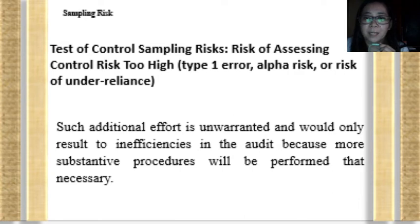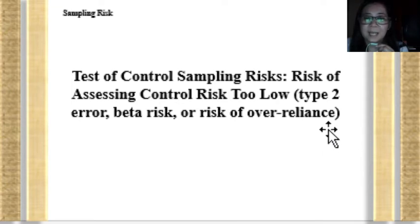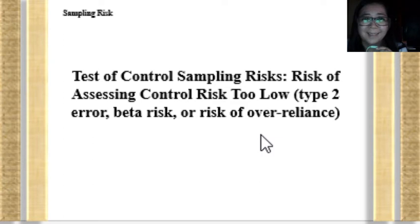The second type of sampling risk under test of control sampling risk is the opposite — the risk of assessing control risk too low, also known as type 2 error, beta risk, or risk of over-reliance. In this case, the auditor over-relied on the internal control; he assessed it as effective when in fact it is not. Between the two types, this is much heavier than the first one, because the auditor will rely on an internal control that is not operating efficiently.